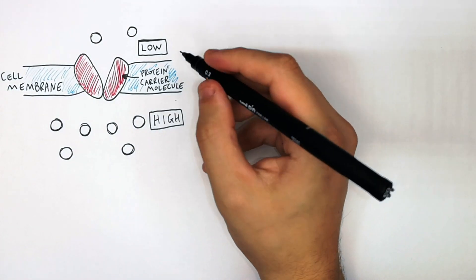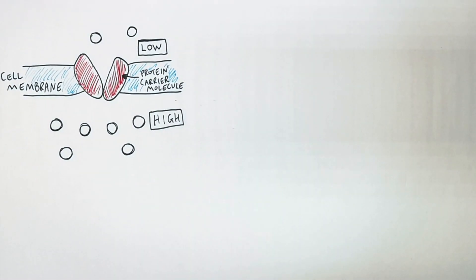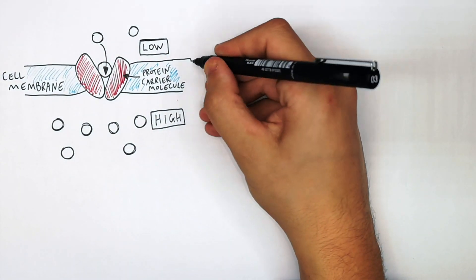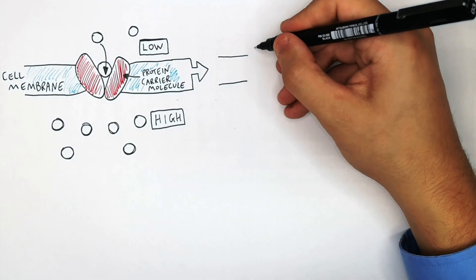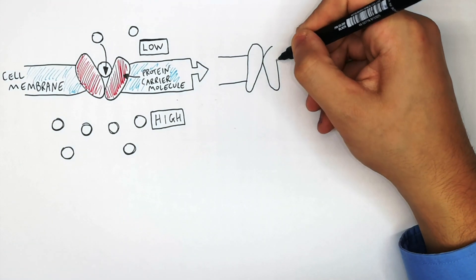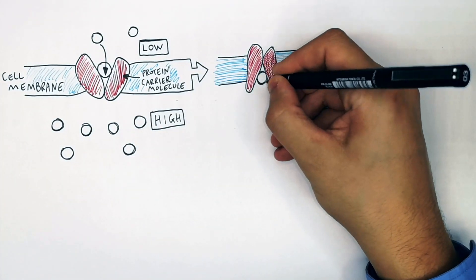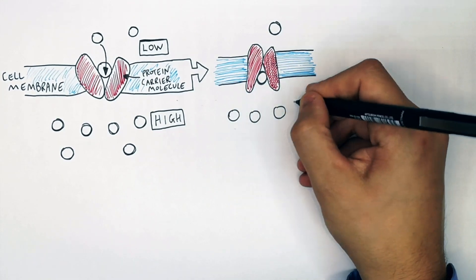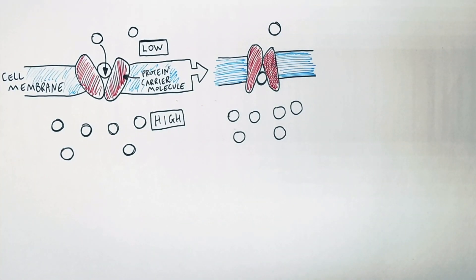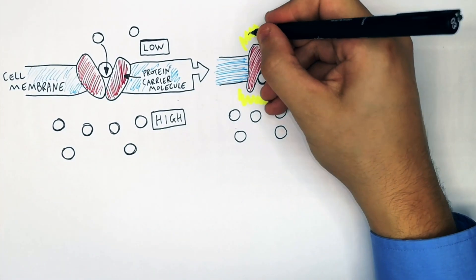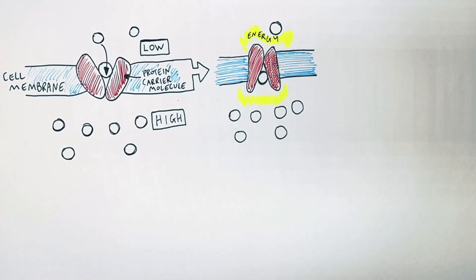So there are two particles on one side and six on the other. One particle is going to bind the protein carrier molecule. Then the protein carrier molecule is going to change shape, carrying the particle from a low to high concentration. Energy causes the protein carrier molecule to change shape, transferring the molecule across the membrane.